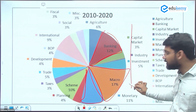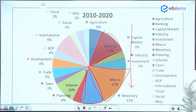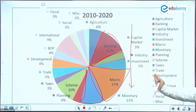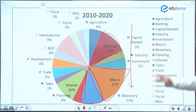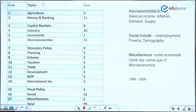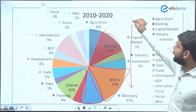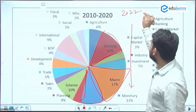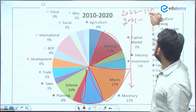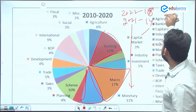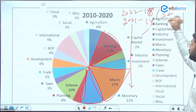These topics are conceptual — if you understand macroeconomics, fiscal policy, and banking concepts, you can apply them across other topics as well. In 2022, approximately 14-15 questions were asked from economy; in 2021, about 14 questions — totaling around 32 questions over two years.